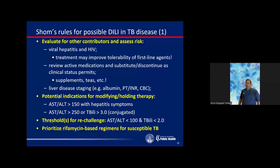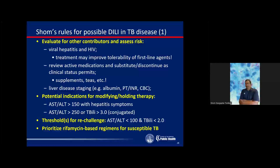Here are general potential indications for modifying or holding therapy. The ATS guidelines say the threshold depends on the assay used at the particular lab. Most people in most labs would expect an ALT above 50 to be abnormal. Based on that, I use three times 50 being 150, and five times 50 being 250. I also make sure to include T-bili. Once T-bili rises above three — especially if conjugated — I need to stop and think.